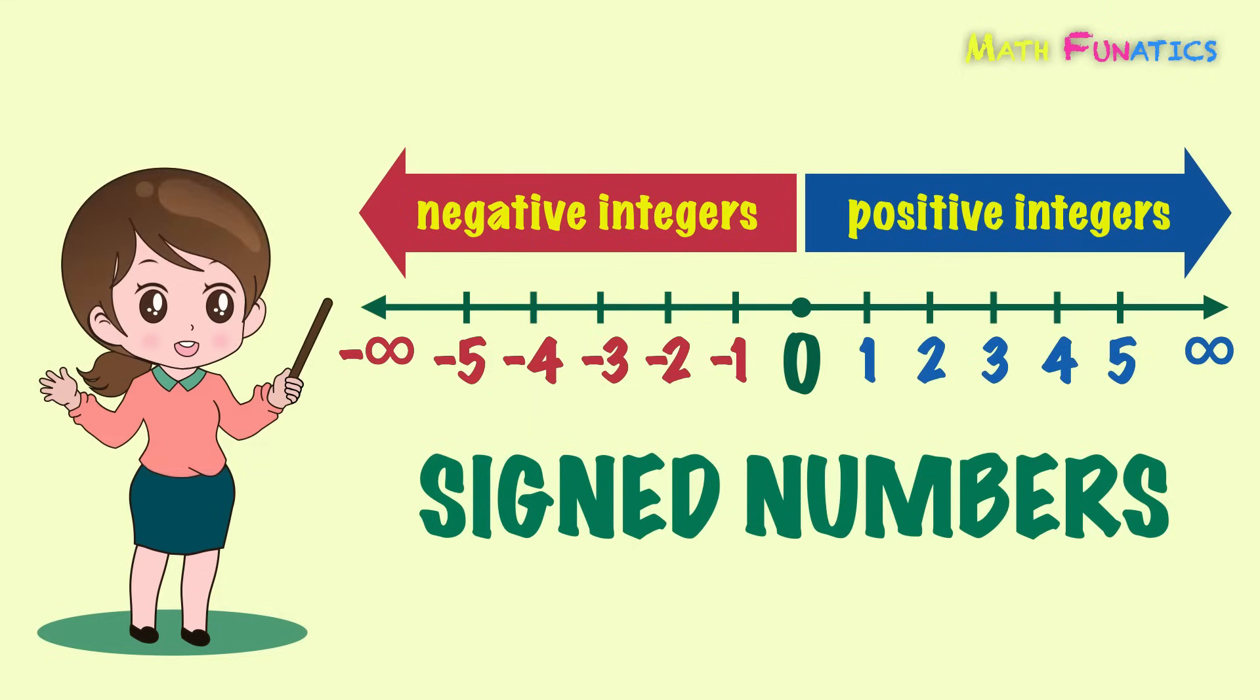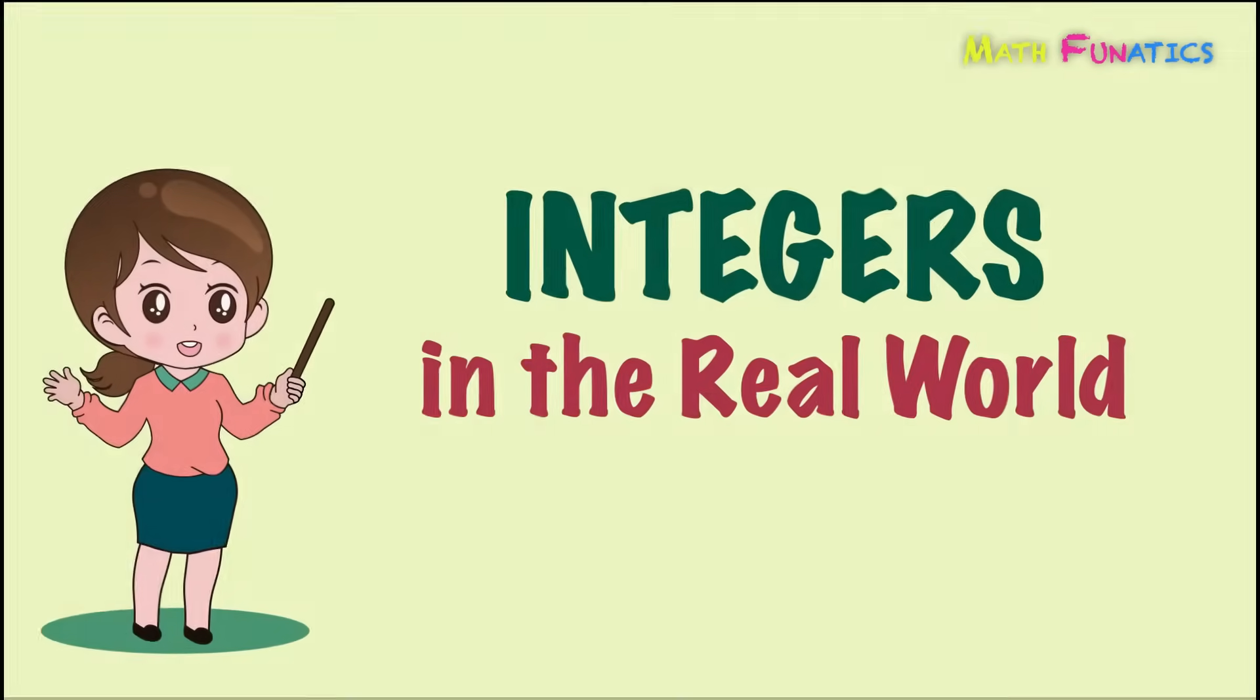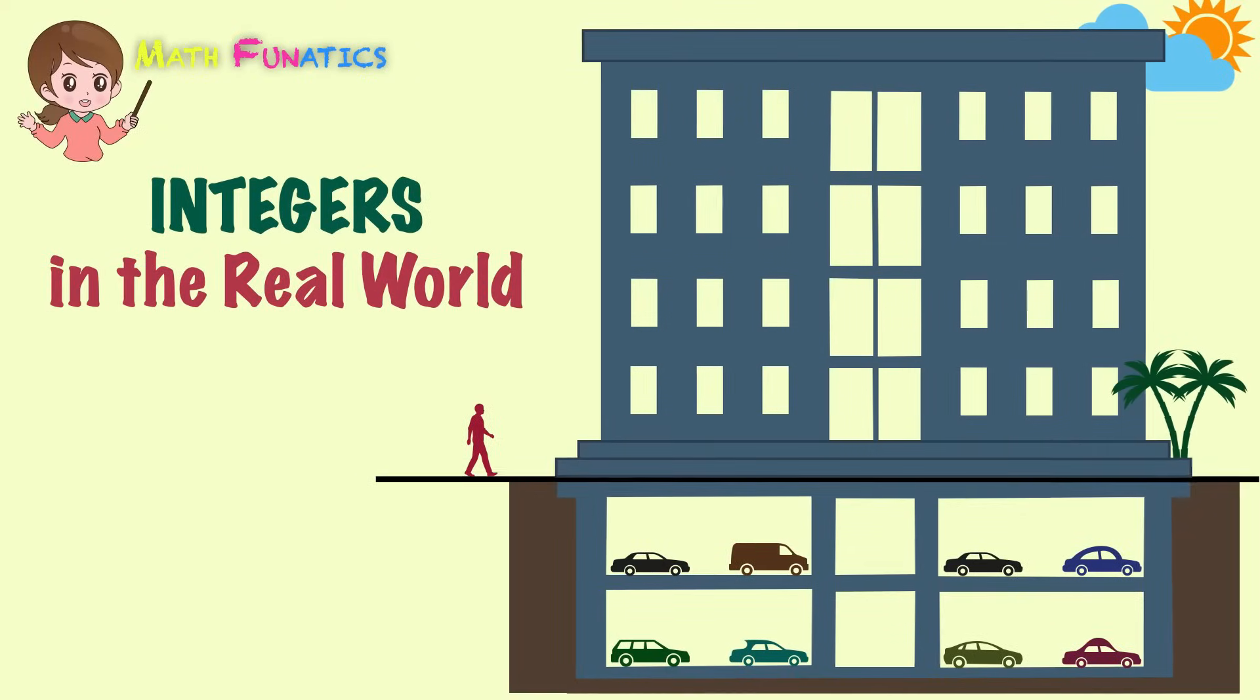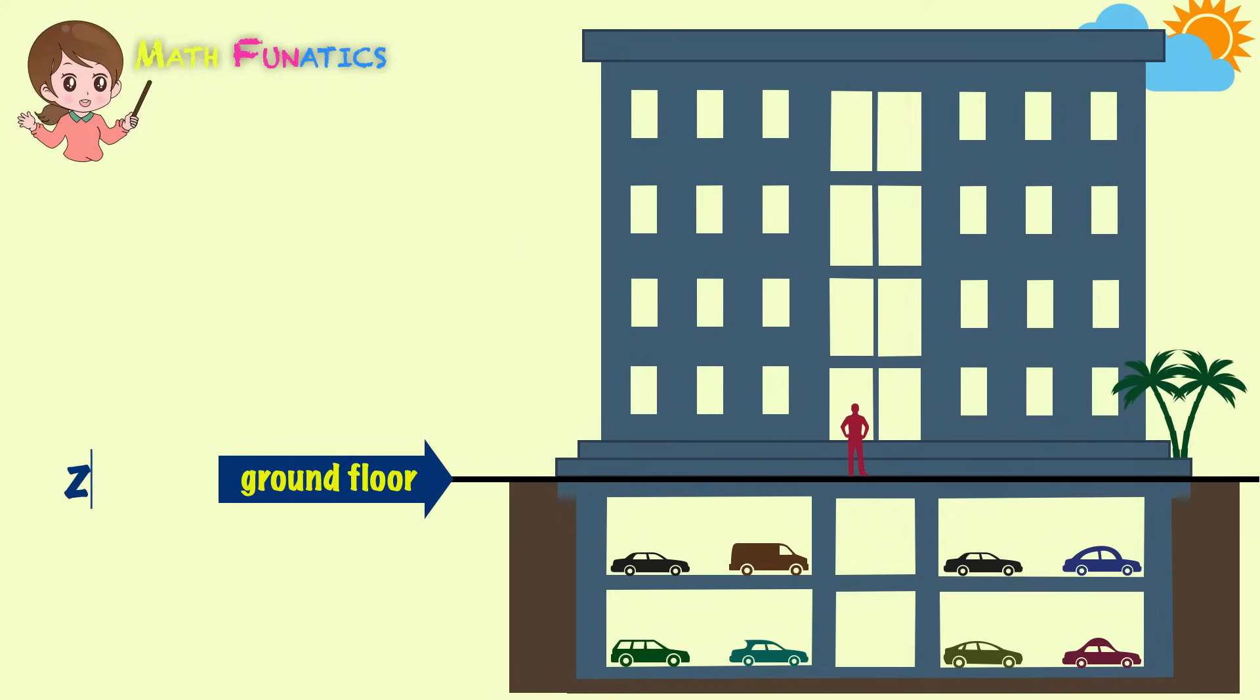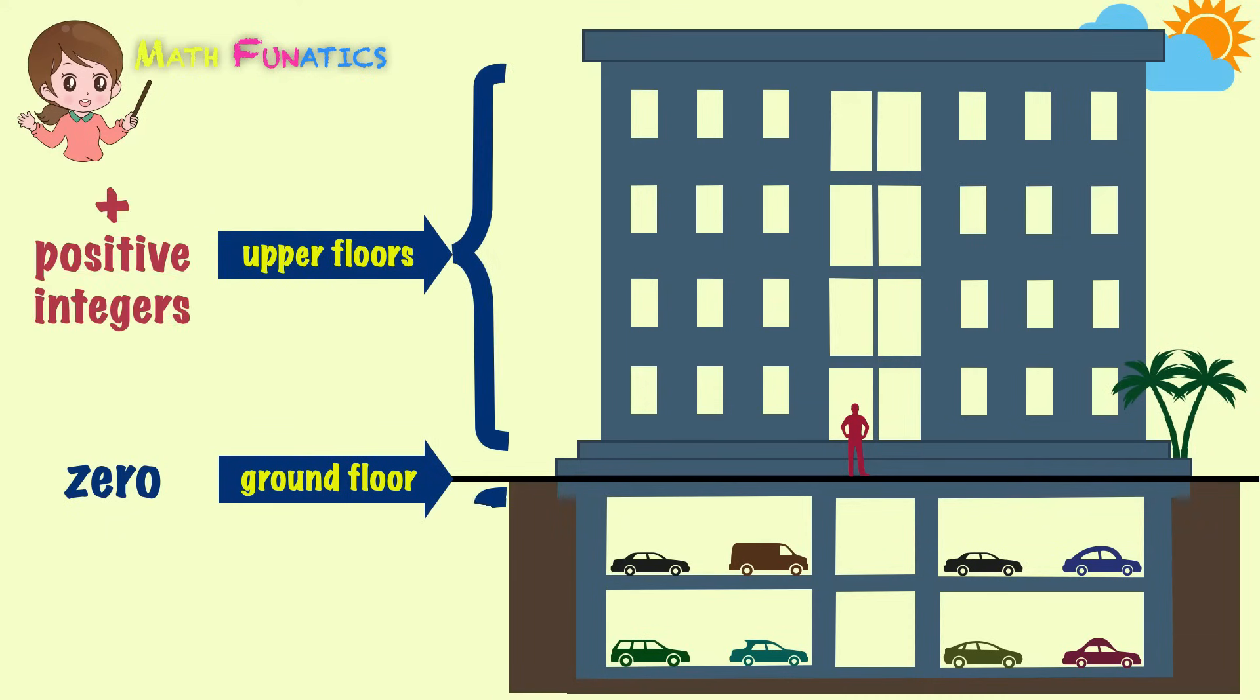To better understand integers, let us apply them in the real world. Let's take a look at this example. Going up and down a building may be related to integers. Let's see how it is done. The ground floor represents 0, while the upper floors represent the positive integers, and the lower floors represent the negative integers.